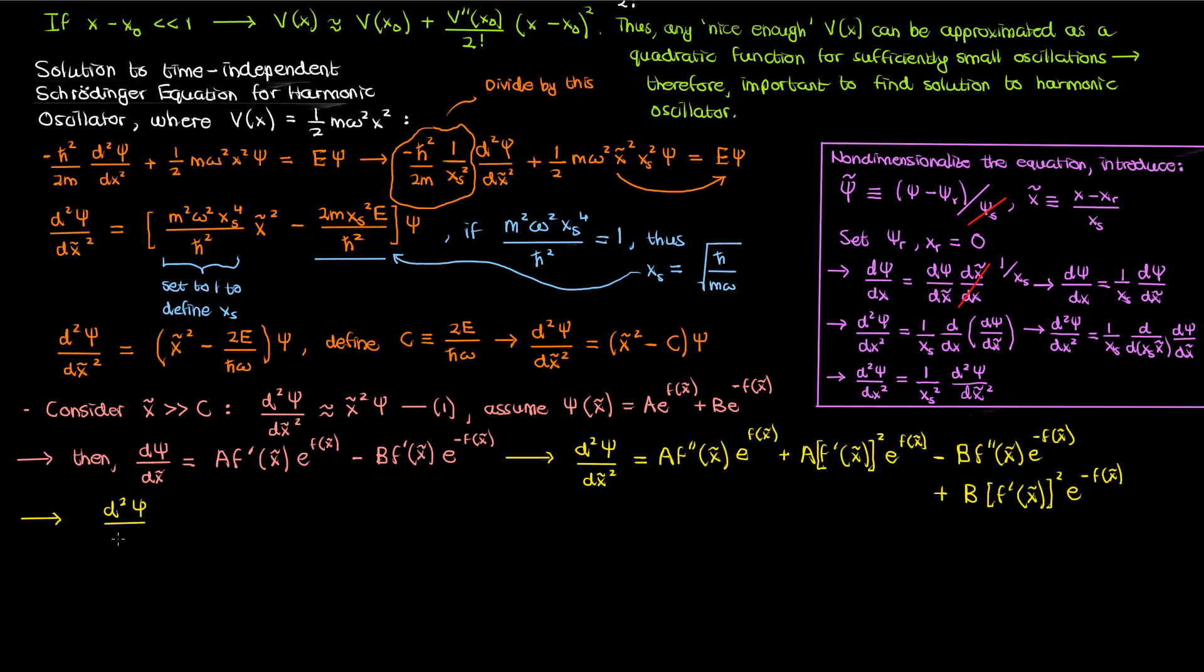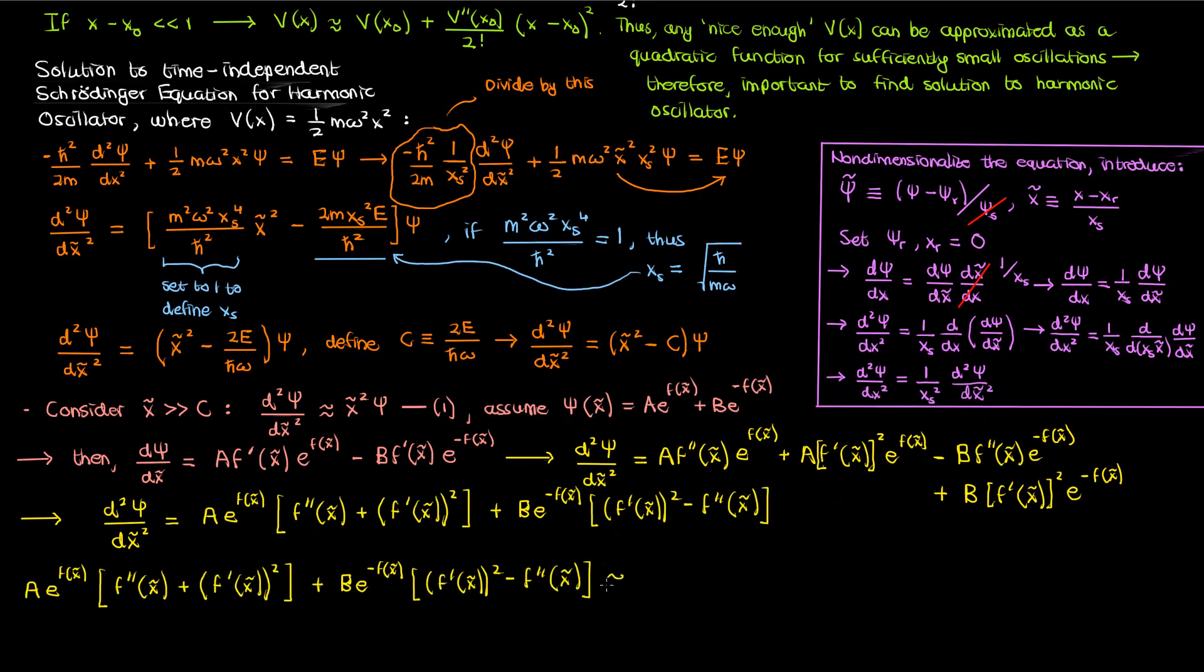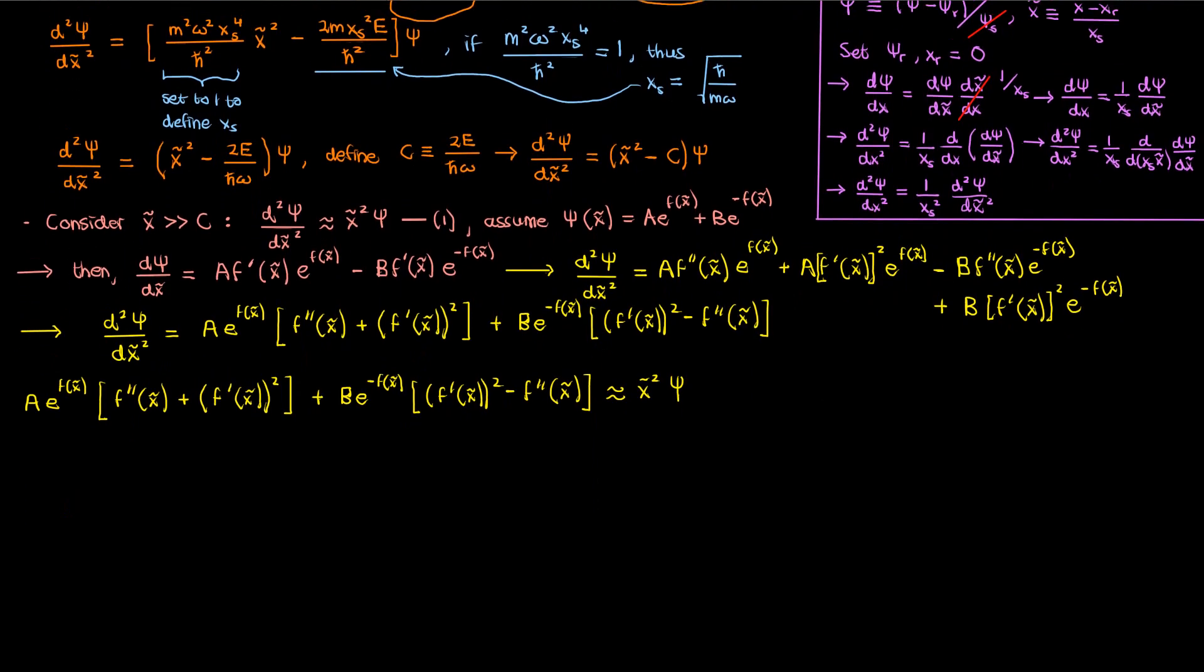Now let's combine the coefficients of e to the f of x tilde and e to the negative f of x tilde to end up with this cleaner equation for the second derivative of psi. We can then easily compare the second derivative to the right hand side of equation 1 by plugging it into the equation. We'll also plug psi into the equation as follows.